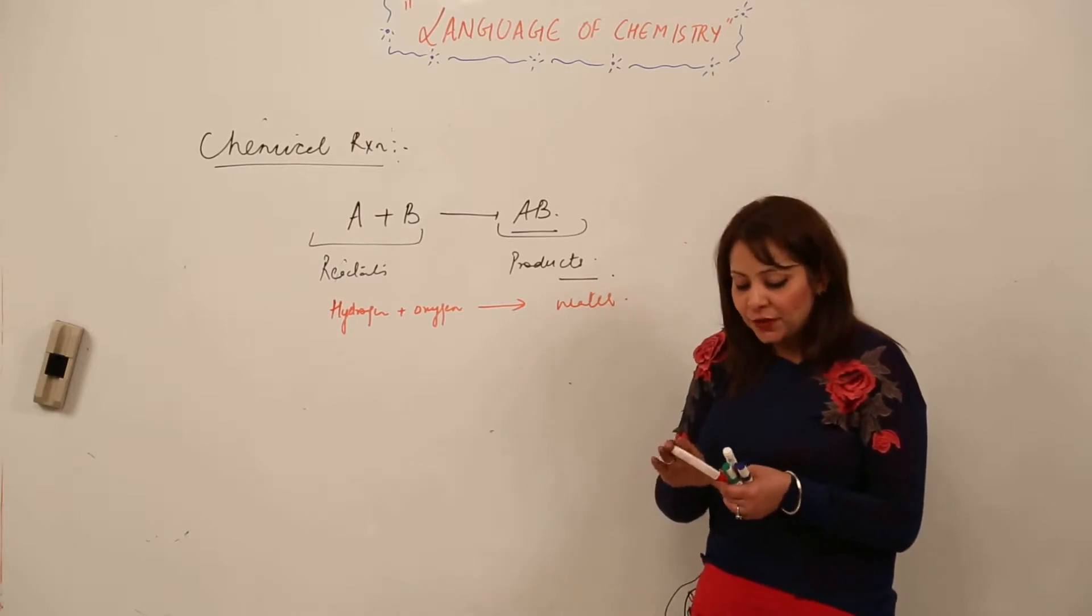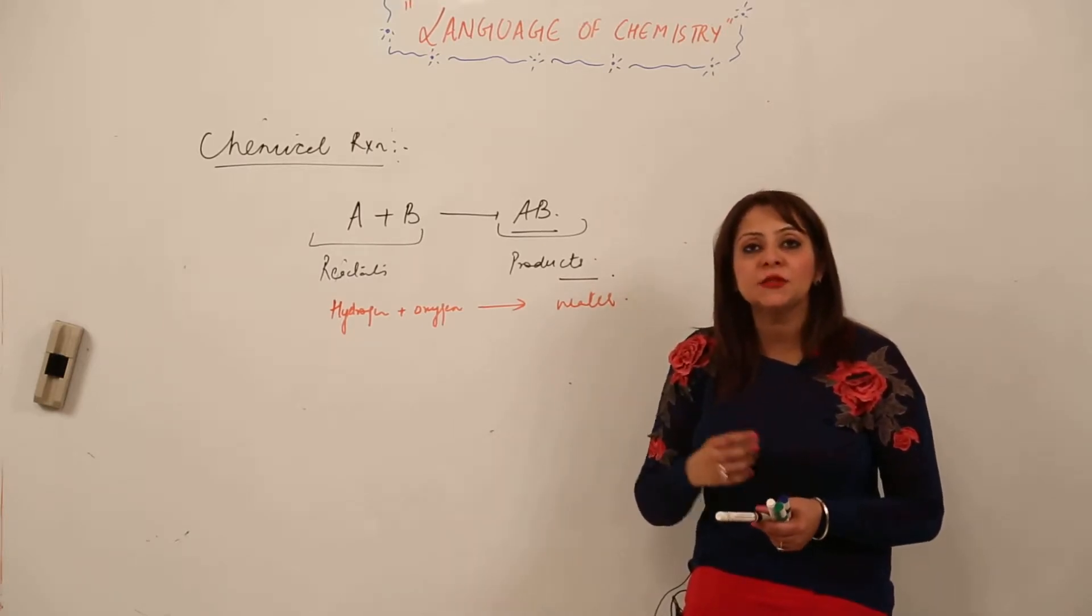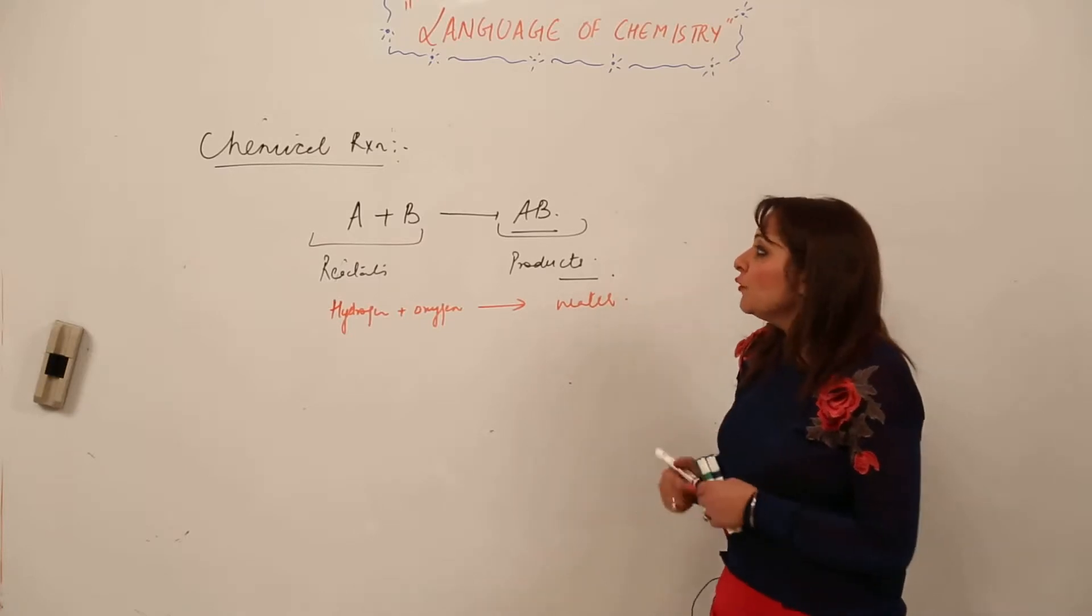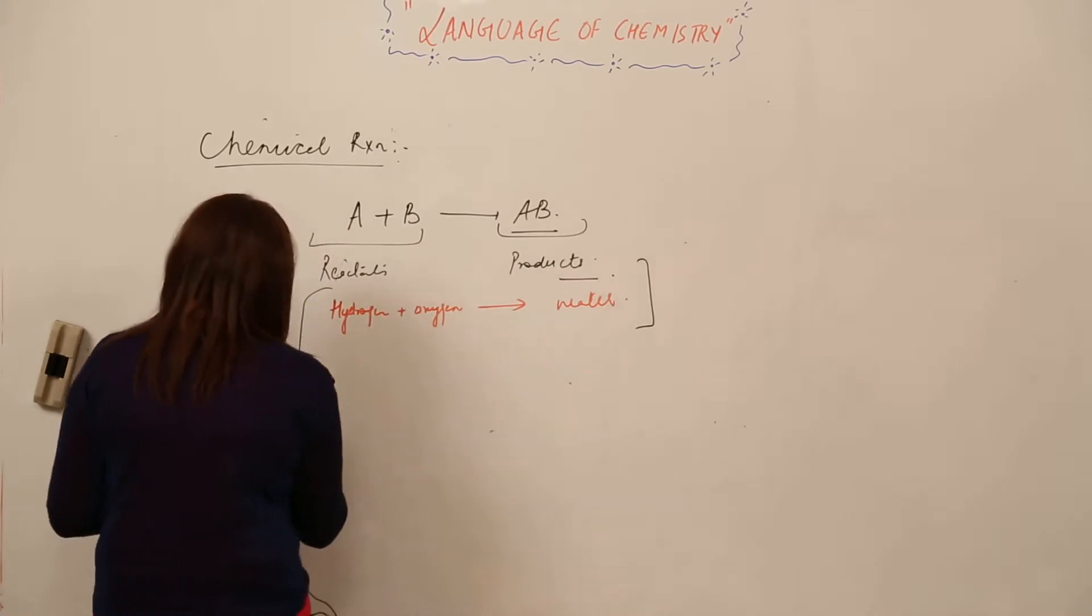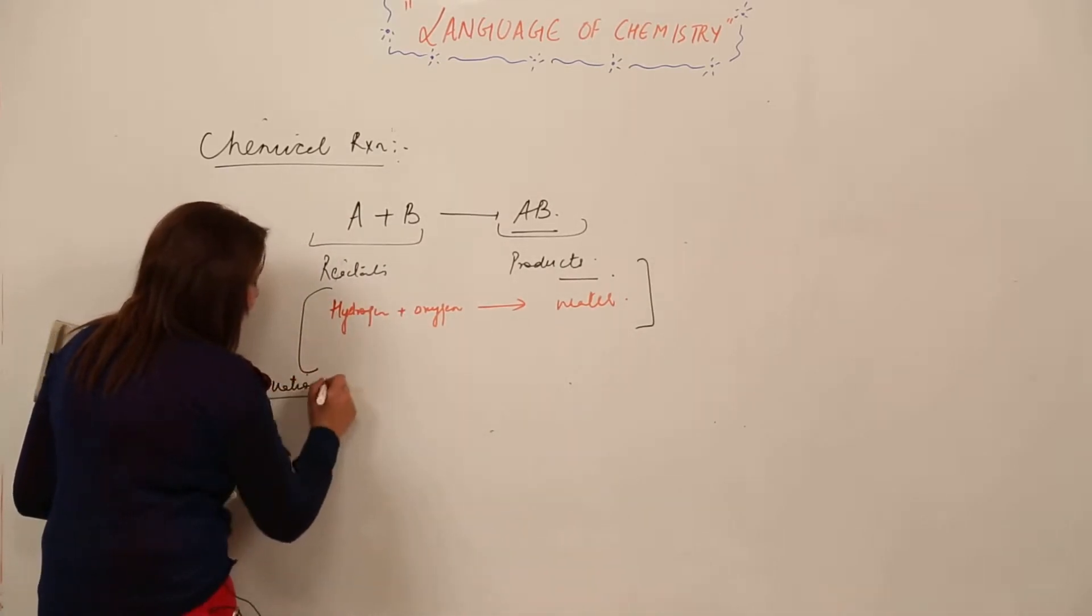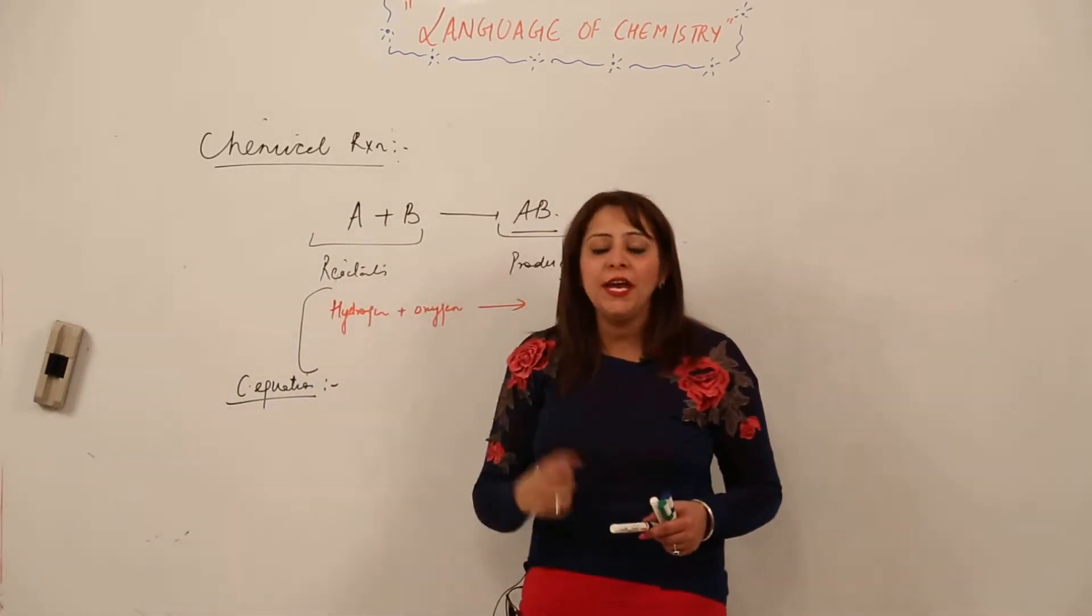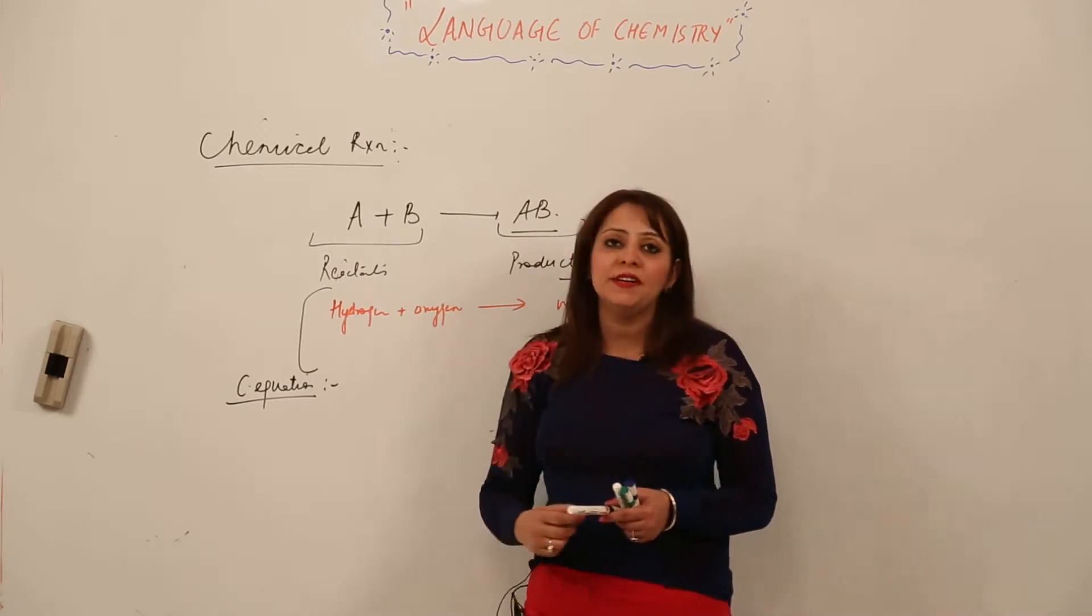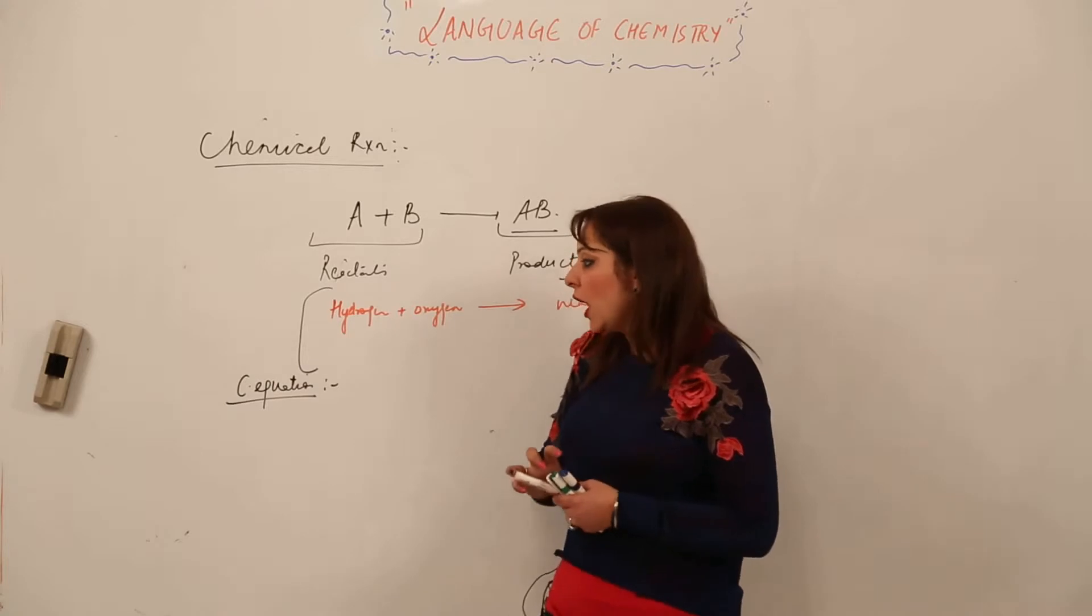But chemistry doesn't understand this kind of reaction. Chemistry understands reactions in terms of chemical formulas, symbols, and moles. So we need to write the chemical reaction as a chemical equation. A chemical equation is a way of writing the chemical reaction in a more informative manner.